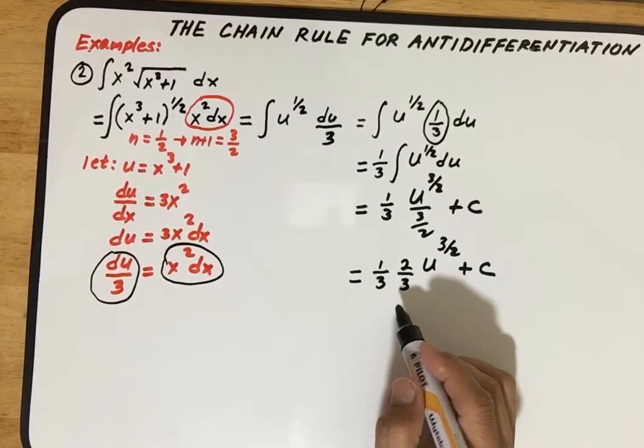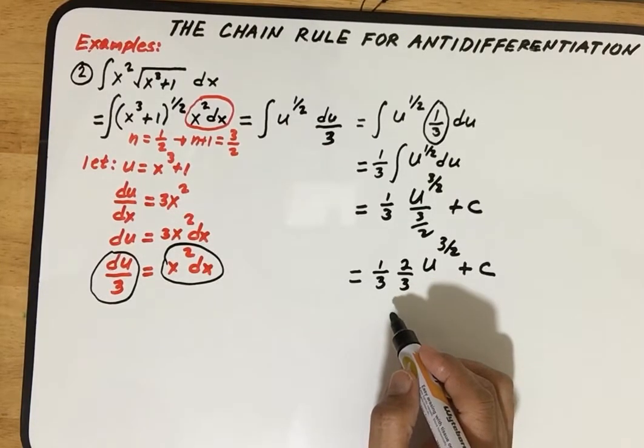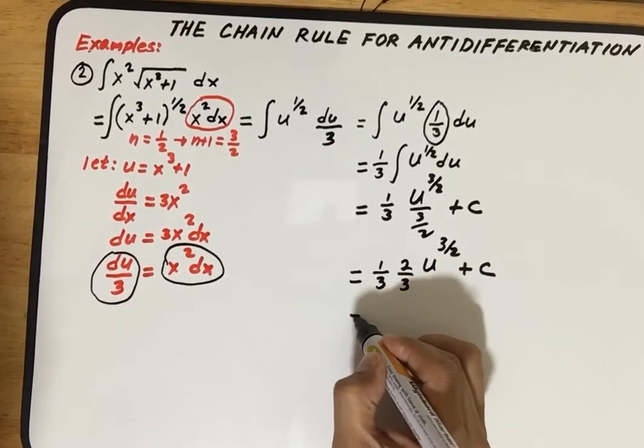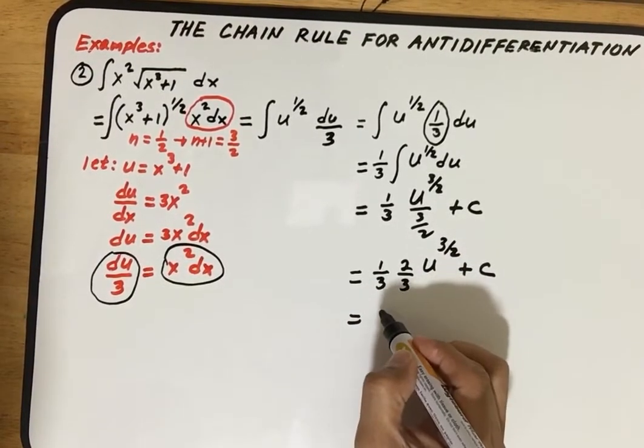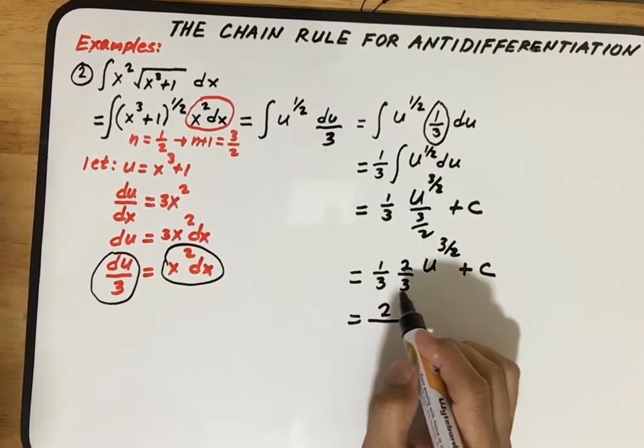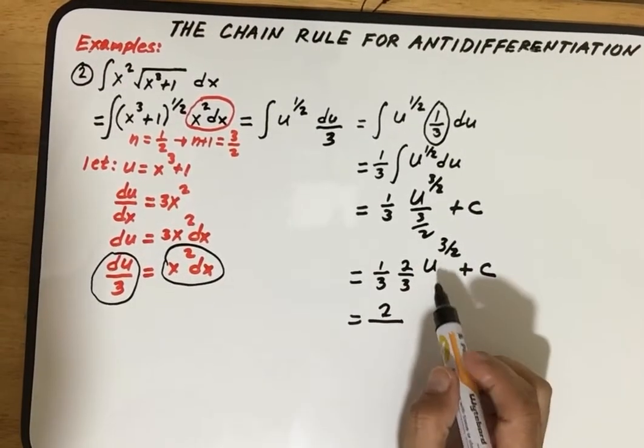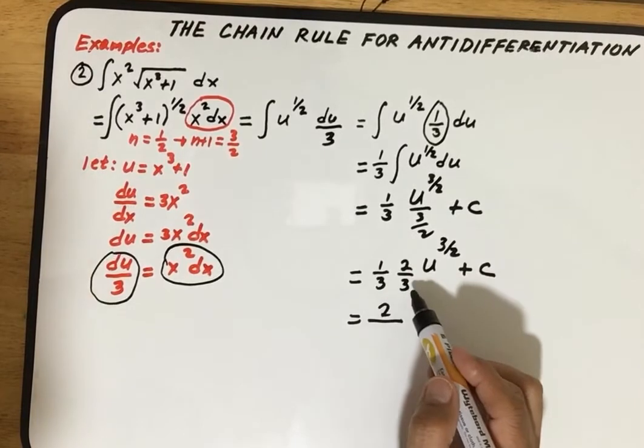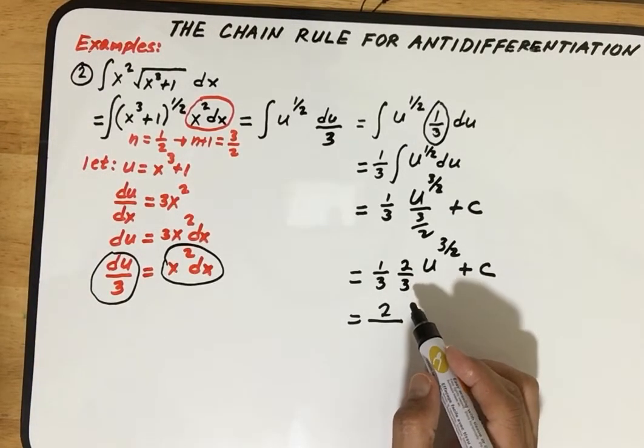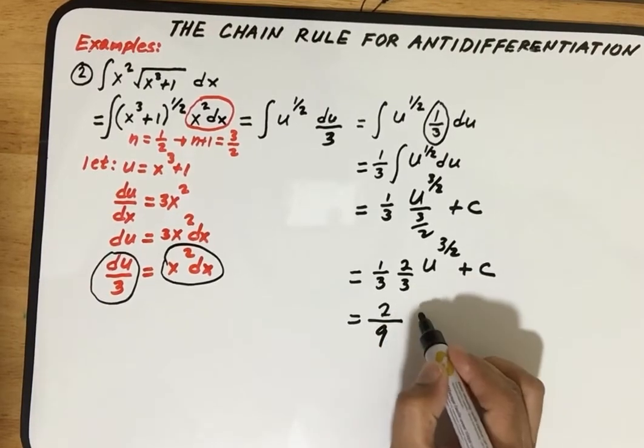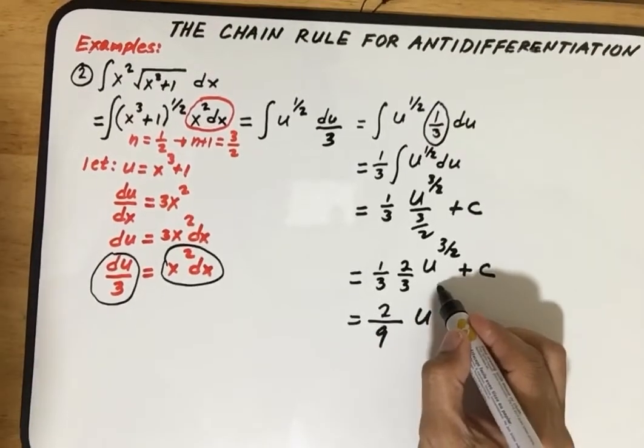Multiplying one times two is two, and three times three is nine, so that would be two over nine u to the three halves plus c.